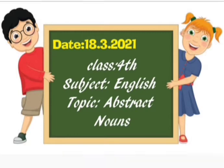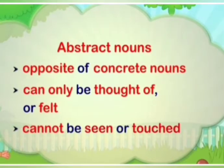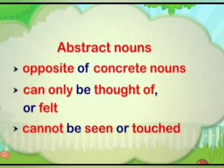What is abstract noun? We will see it. Concentrate children. Abstract noun — abstract nouns are opposite to a concrete noun. Concrete nouns means natural things. Abstract noun is opposite to a concrete noun. They can only be thought or felt. They cannot be seen or touched.